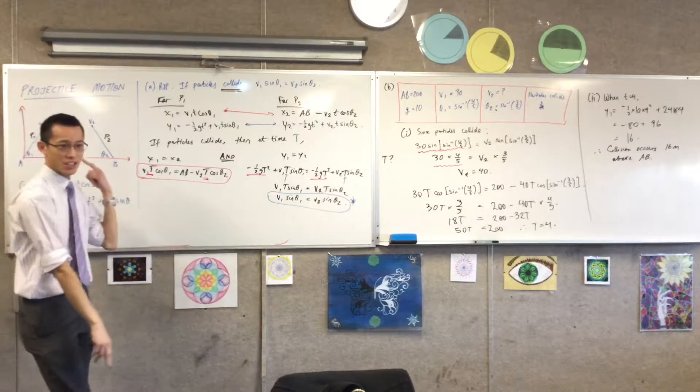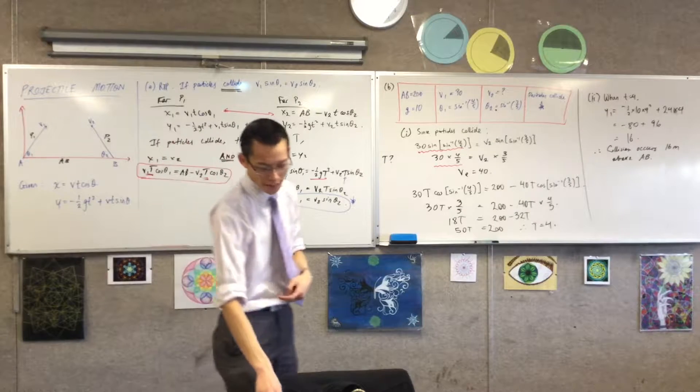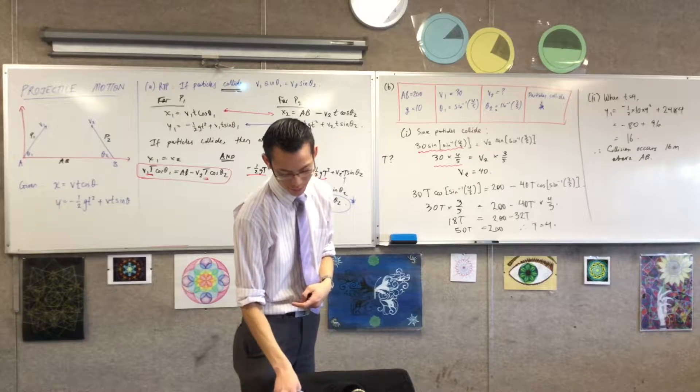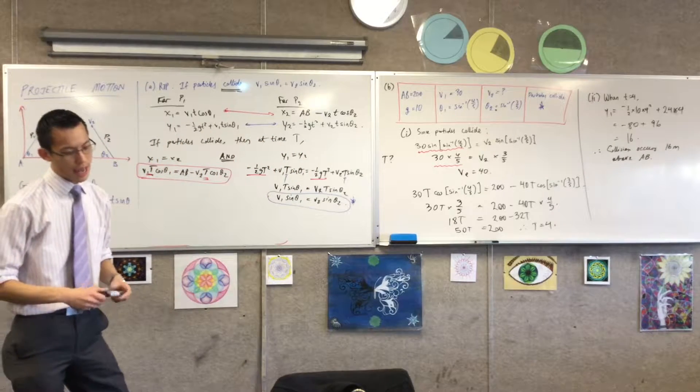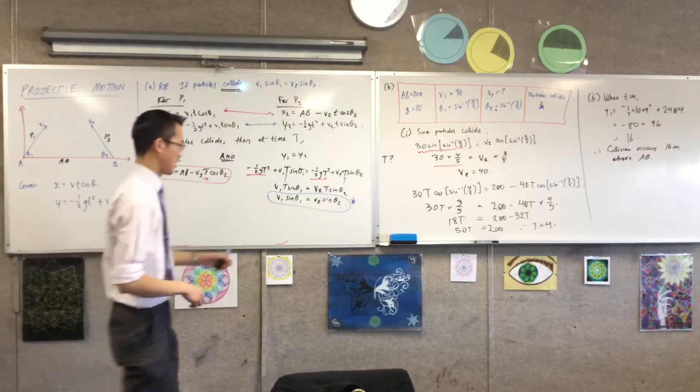So, I know when collision occurs, I know where collision occurs. Now let me just read the wording of this question for you so that you can see what you're going to have to do. Find, correct to the nearest degree, the obtuse angle between the directions of motion of the particles at the instant they collide.